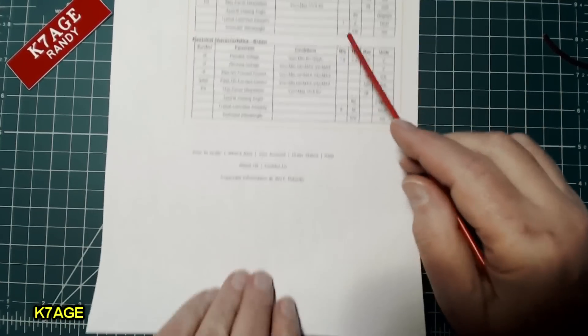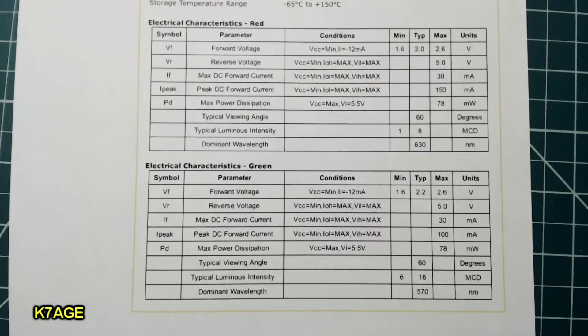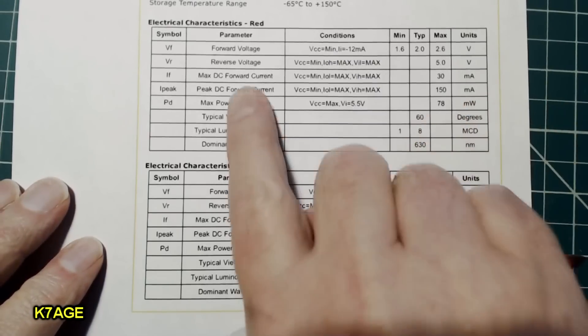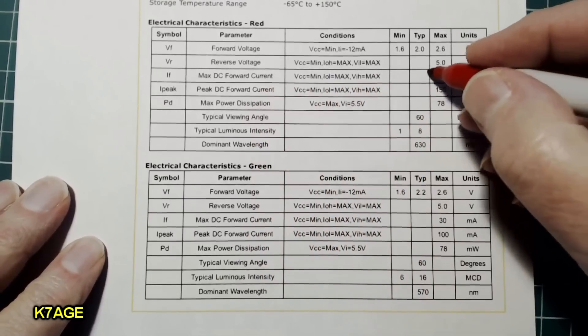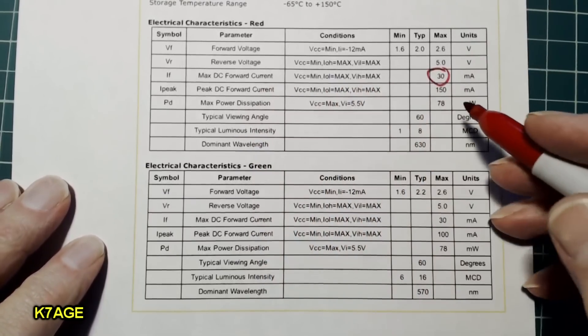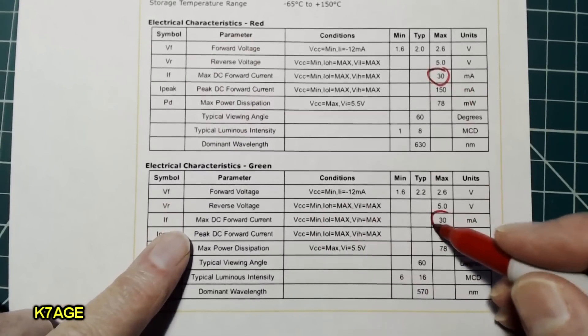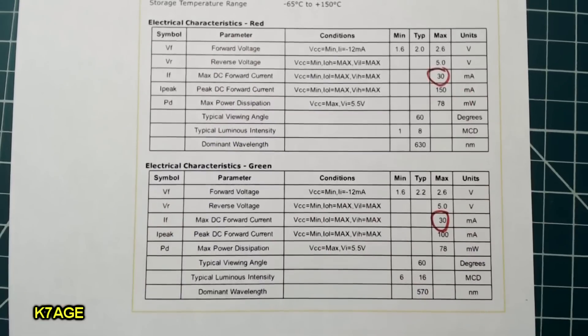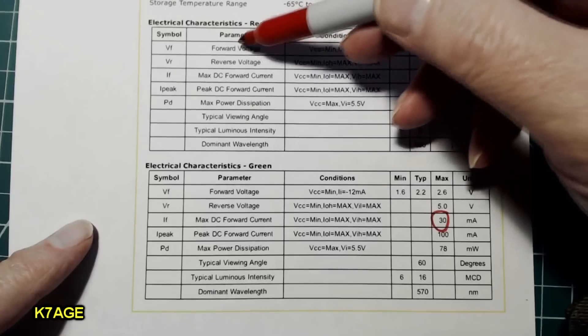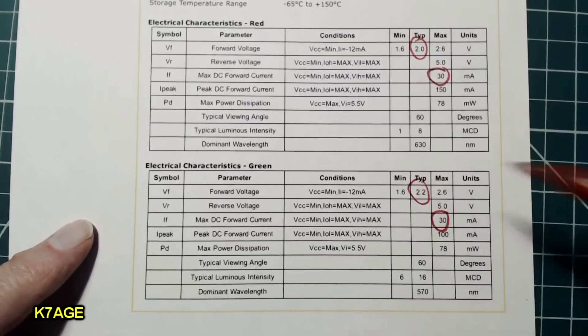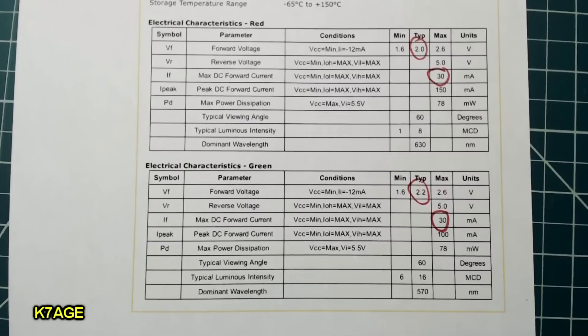And over here is what we need to take a closer look at. So a couple things we need to look at on the datasheet. One is the maximum forward current going through. So that's what we've got to make sure we don't go beyond that. So for the red LED, it's 30 milliamps. And for the green LED, it's also 30 milliamps. And the other number that we need to look at is the voltage drop across the LED. So the forward voltage for the red is 2 volts. The forward voltage for the green is 2.2. So we can use 2 volts and 30 milliamps when working with this LED.